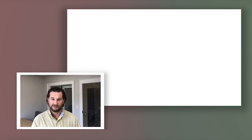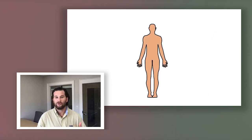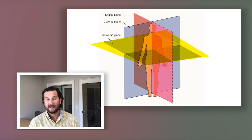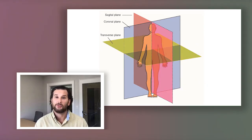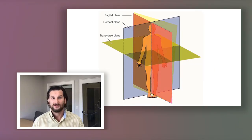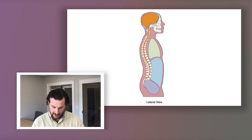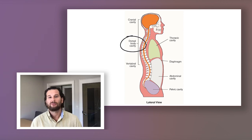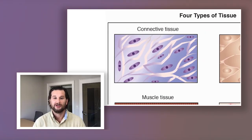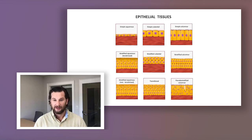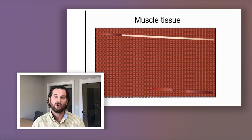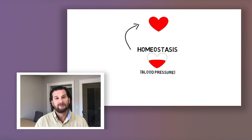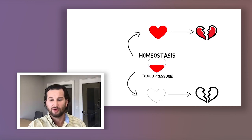Know all the body cavities. Know terminology like posterior, anterior, lateral, distal, and medial, and a few more. Know body planes and the body regions — the upper limb, the lower limb, the central and head region. Know the four types of human tissue: connective, epithelial, muscle, and neural. Know homeostasis and feedback mechanisms — there is negative and positive feedback.